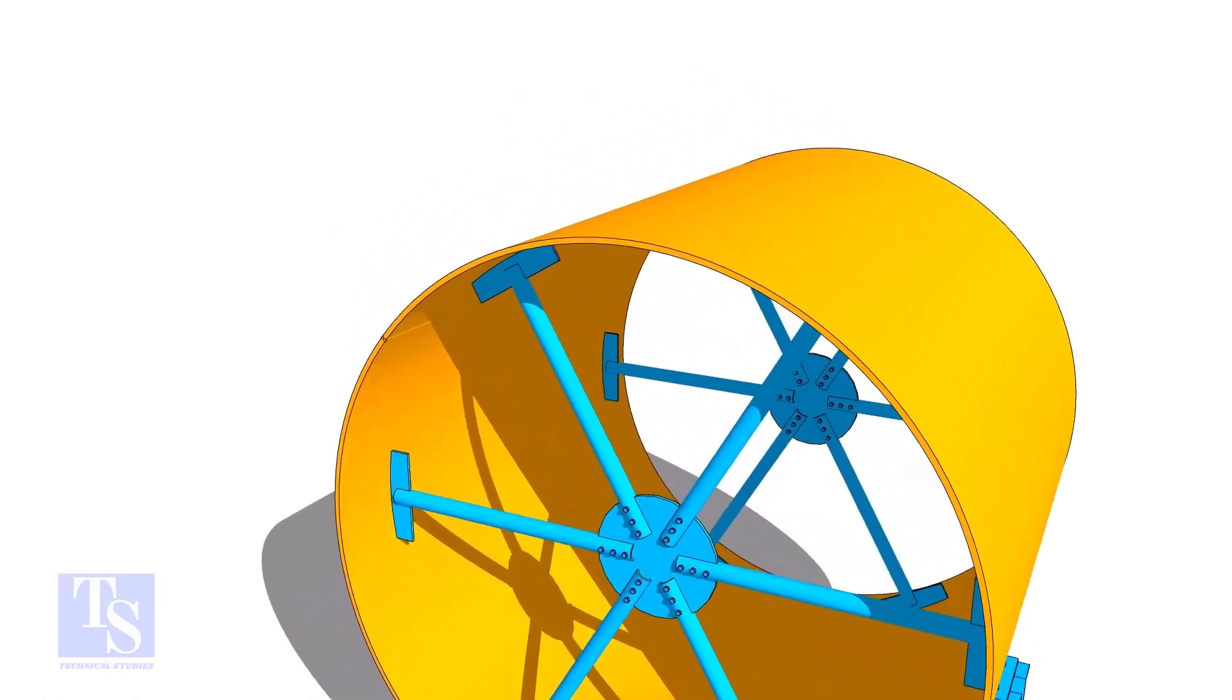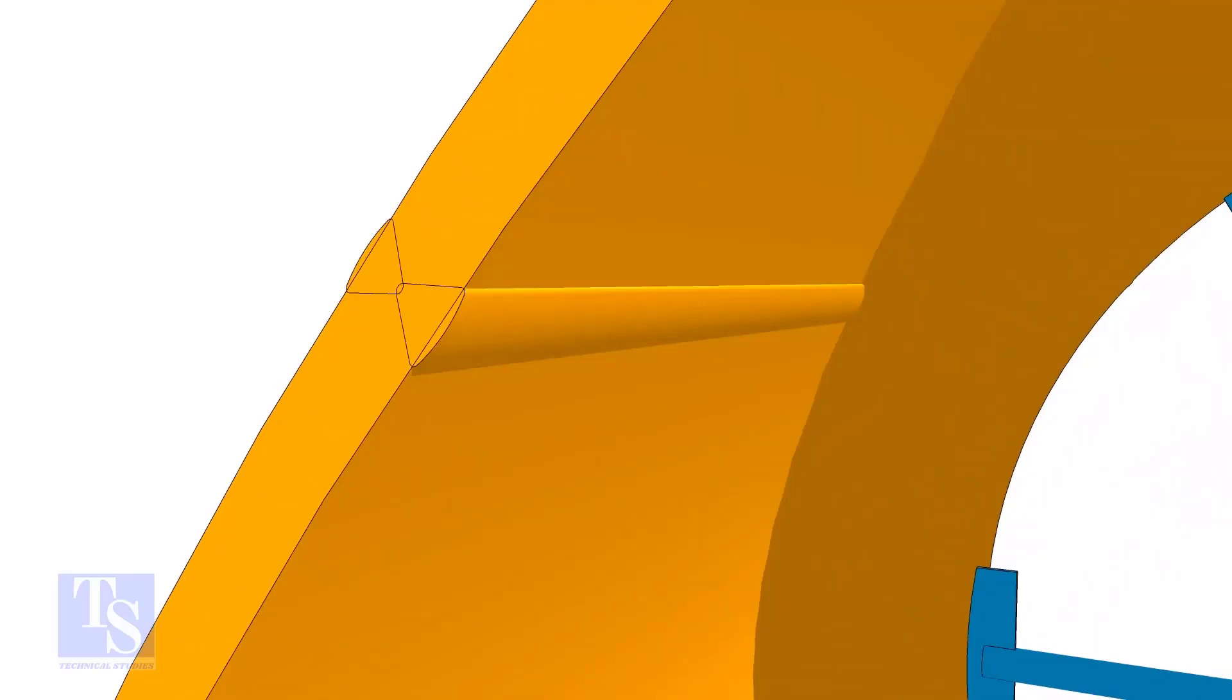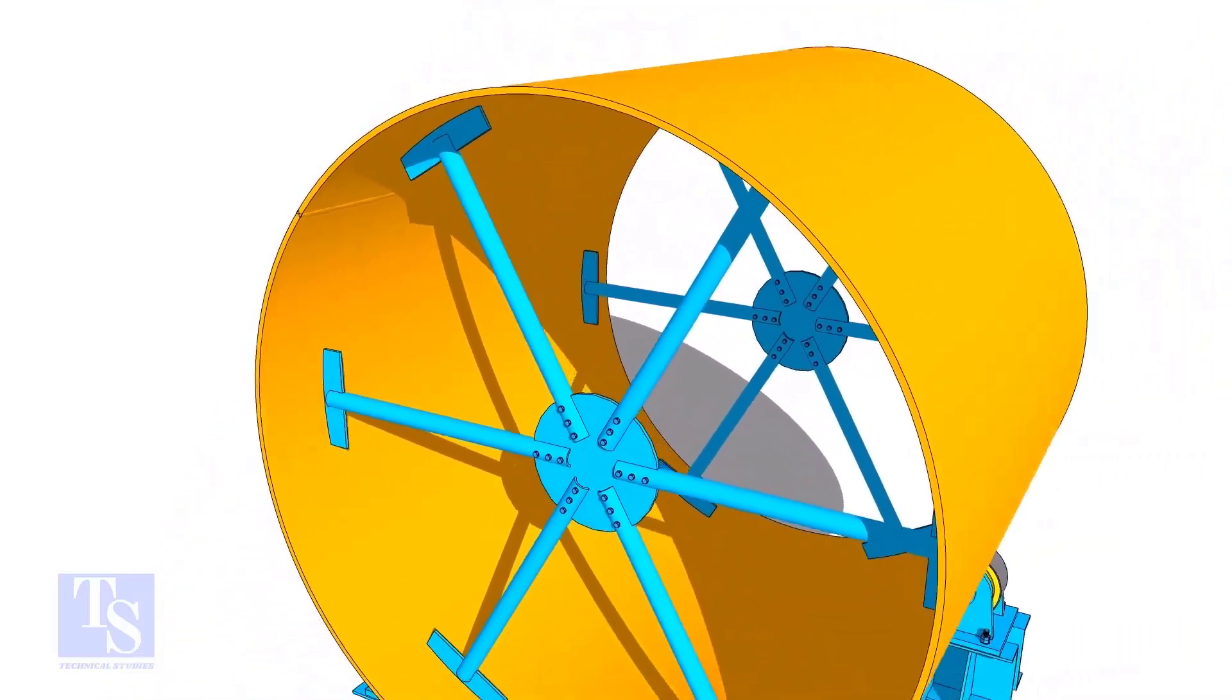After the shell plate rolling, install the spider support and complete the long seam welding. The spider support will help to maintain the circularity of the shell.